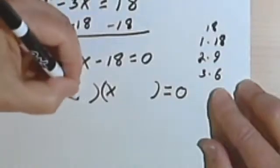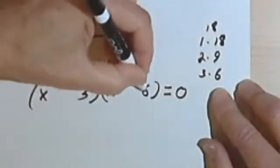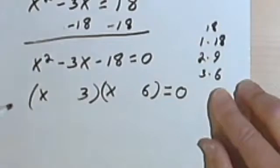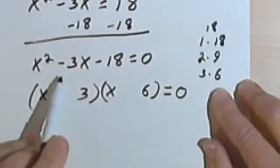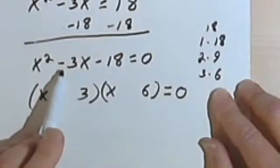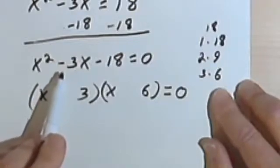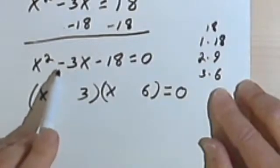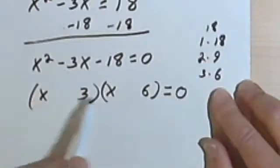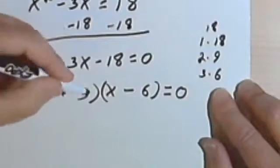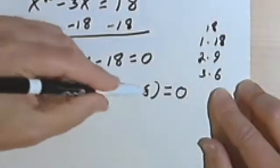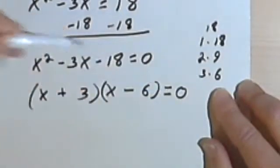So I'm going to have a 3 and 6, and now I just have to figure out which one's positive and which one's negative. So the trick I use is looking at the sign of the second term, which is negative, I give that sign to the larger of the two numbers. So I've got x plus 3 times x minus 6 equals 0.